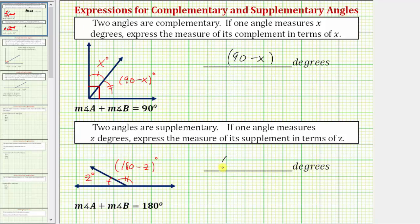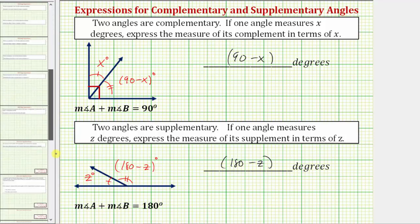So again, we enter 180 minus z; the units of degrees are already here. As an example, if z equals 50, this angle measures 50 degrees, and this angle measures 180 minus 50, which equals 130 degrees. I hope you found this helpful.